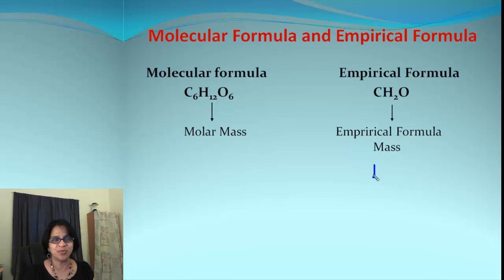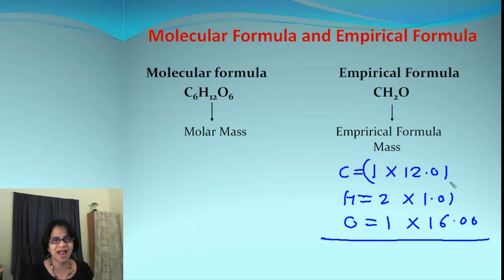That's going to be 1 carbon times 12.01. Hydrogen will be 2 times 1.01 and we get oxygen, 1 atom and that times 16.00. When we add all of these, the final answer is 30.03.